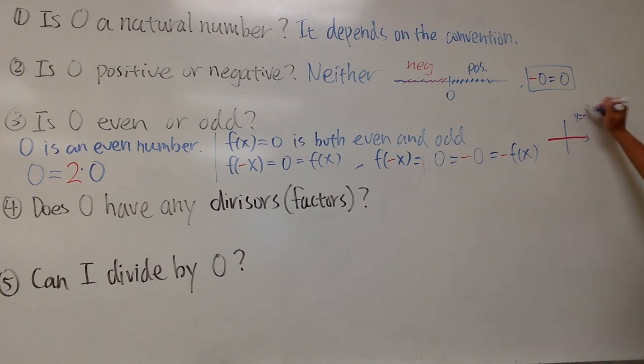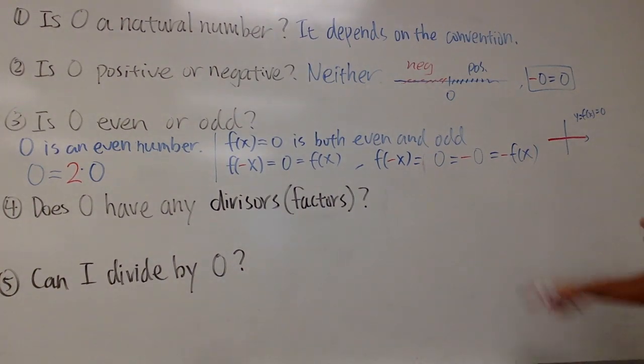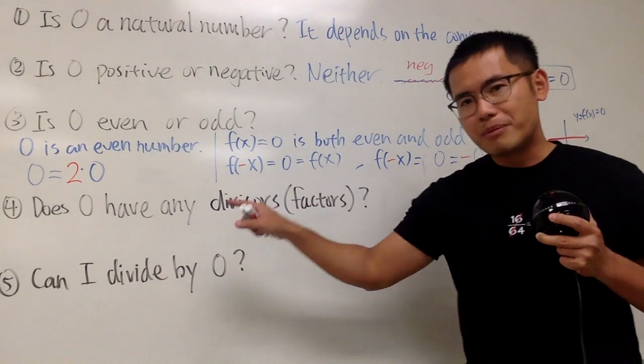So this is the zero function. If you flip horizontally or turn 180 degrees, you see the nice symmetry. So it's both even and odd. Very nice. Now, number 4.